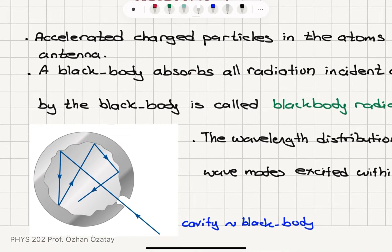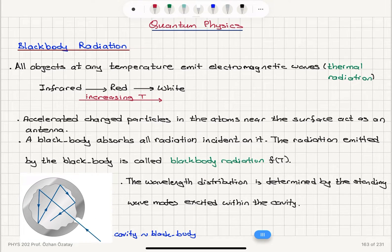A good model of a black body is a cavity. So you can see that when electromagnetic radiation enters this cavity, we have the radiation absorbed, and for the emitted waves from this black body, we will have the wavelength distribution determined by the standing wave modes excited within the cavity.